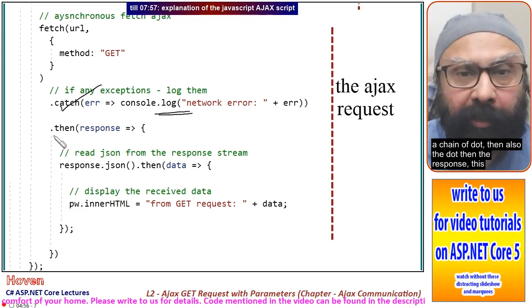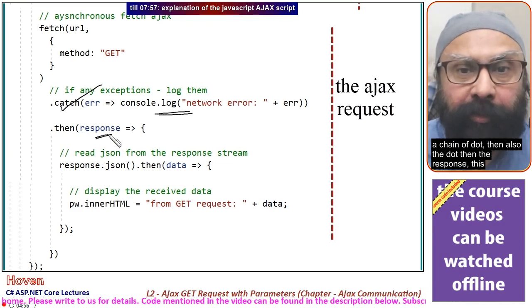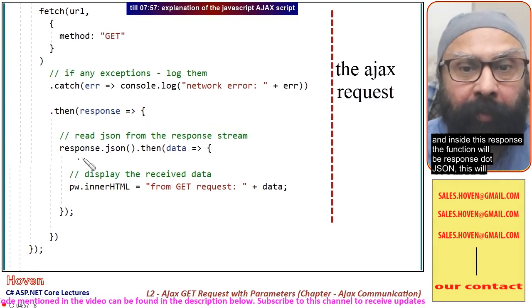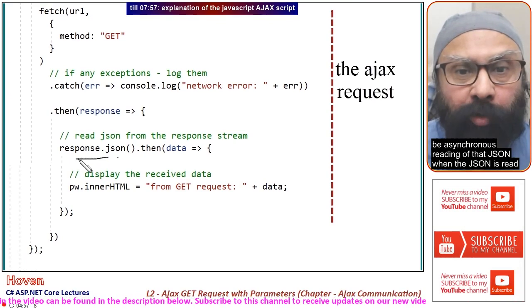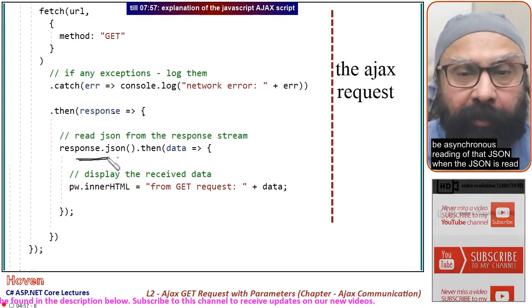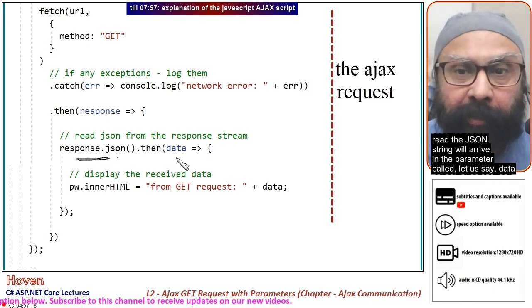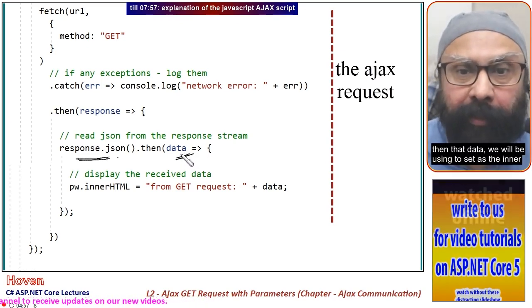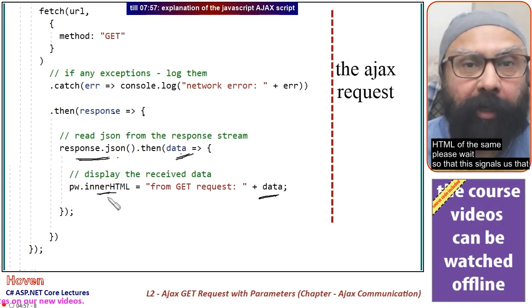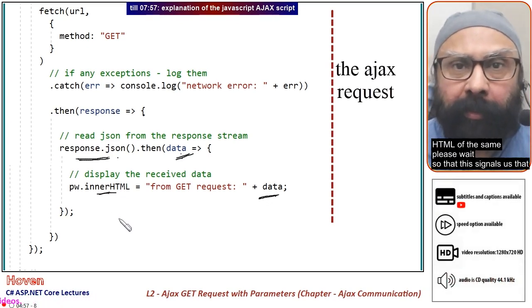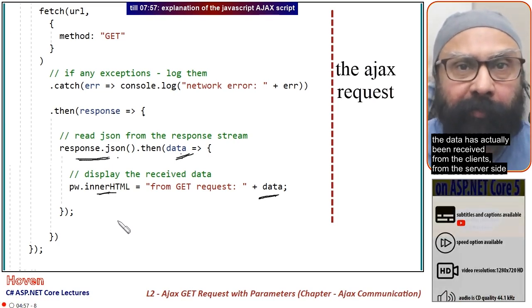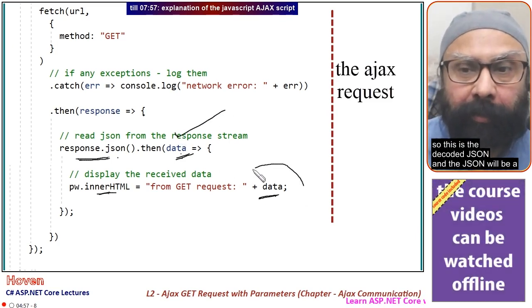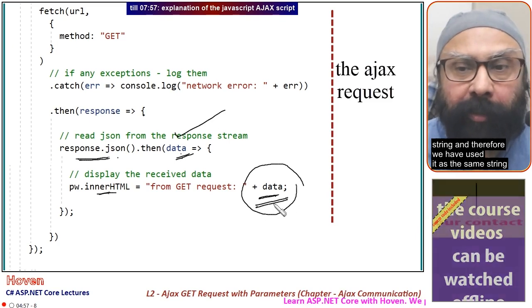Then there's a chain of .then also. The response will be the response stream obtained asynchronously. Inside this, response.json will asynchronously read the JSON. When the JSON is read, the string will arrive in the parameter called data. That data will be used to set the inner HTML of please wait, signaling that data has been received from the server.